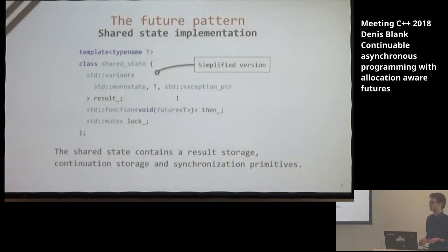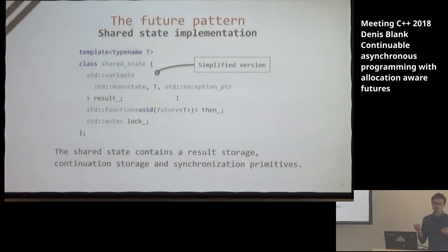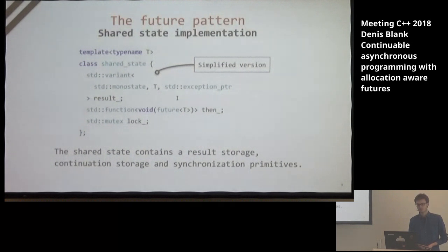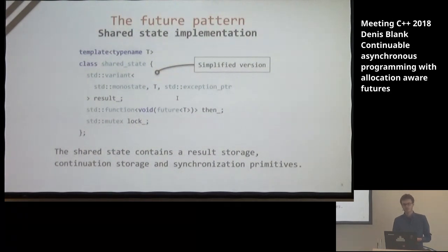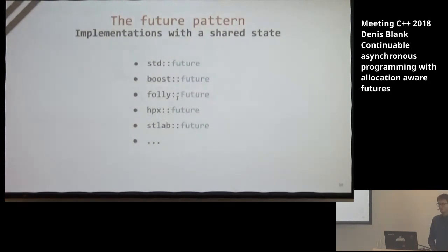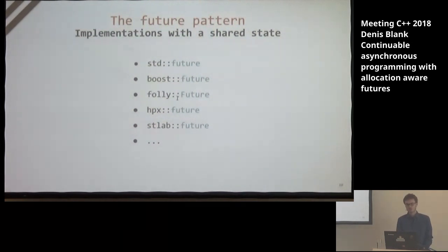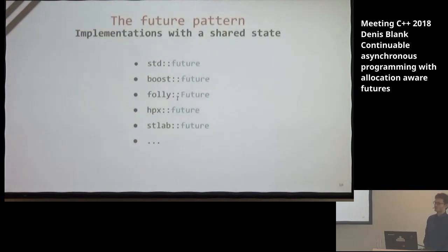The naive approach of implementing such a shared state looks like this. We have some joint storage which can hold nothing, a result, or an exception pointer — which usually indicates that the asynchronous operation has failed. Then we have storage for the callback, probably something more sophisticated than std::function. And we need a synchronization primitive to guard the shared state against race conditions, since we could possibly access it from many threads. There are other future implementations: Boost.Future, Folly Future from Facebook, HPX Future, or the SDBLab future presented last year.